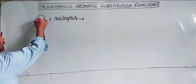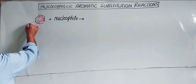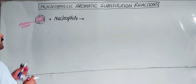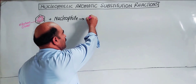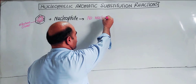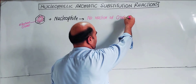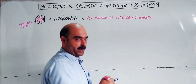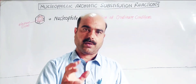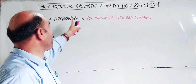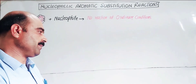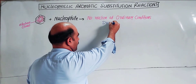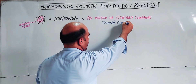In front of the electron cloud, the benzene ring presents a rich source of electrons. This is the key problem — the nucleophile cannot easily attack a positive center. Under normal conditions, no reaction occurs. Under ordinary conditions, nucleophilic aromatic substitution does not take place. Drastic conditions are required for a nucleophile to attack.